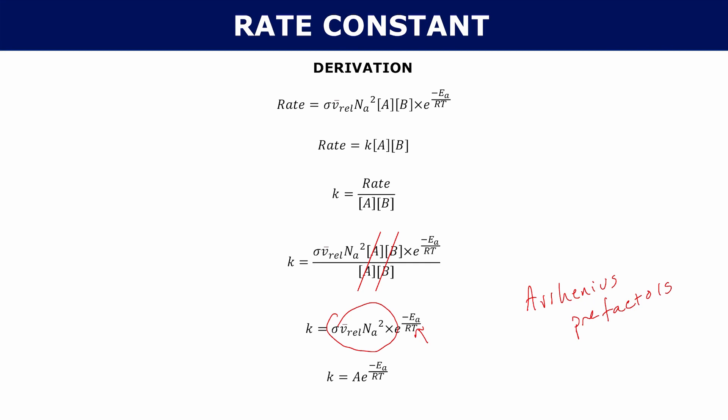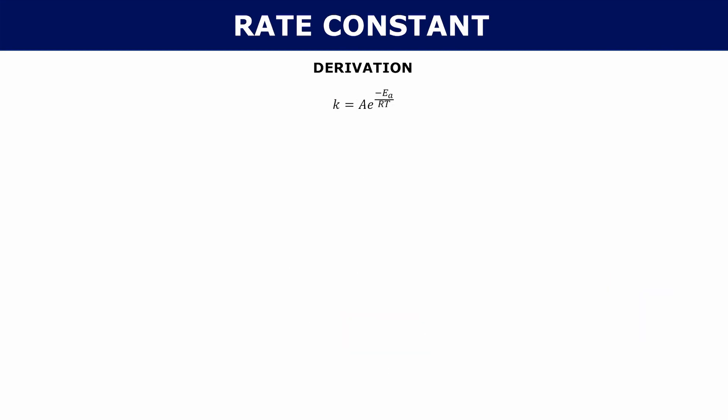Now that we have this form, we can get the graphical form by just taking the natural log of both sides, giving us: natural log of k equals natural log of A minus Ea over RT. That is your graphical form — your y equals mx plus b.